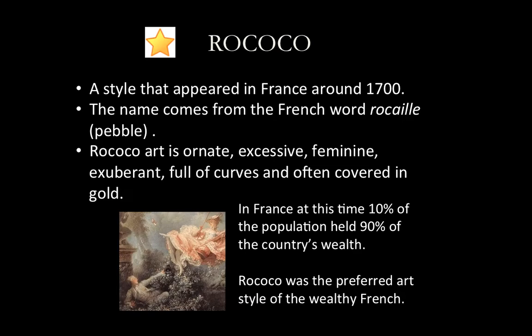Rococo was a style that appeared in France around the year 1700, and it got its name from the French word rocaille, which means pebble, because a lot of the ornamentation of this time period featured pebbles, but also leaves, flowers, and other things from the natural world.